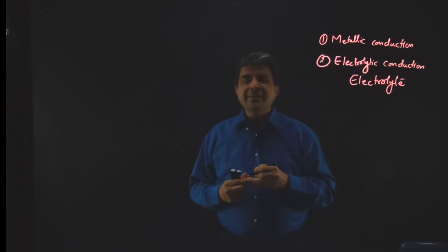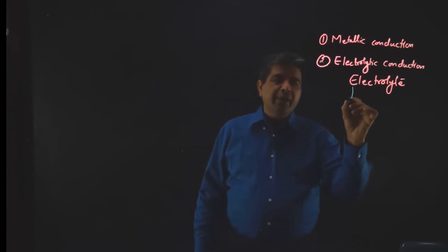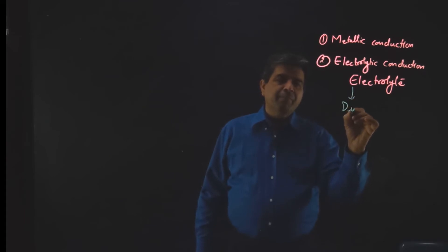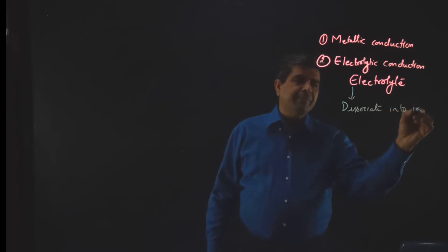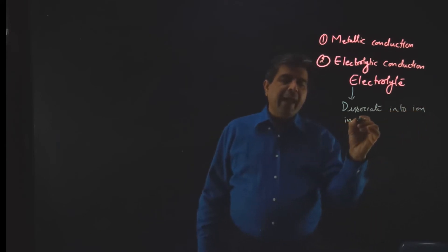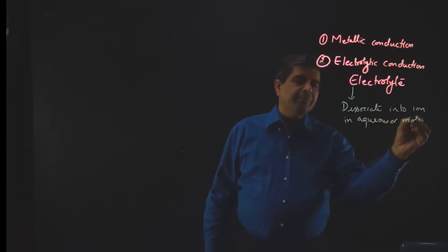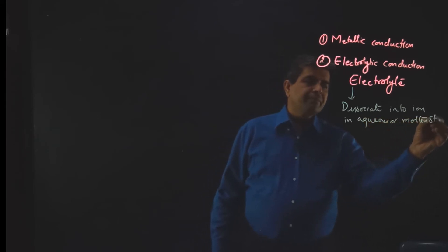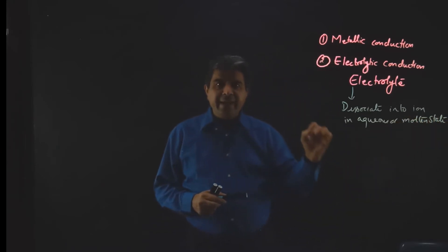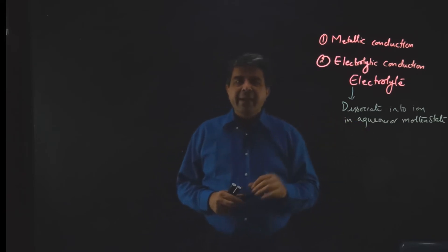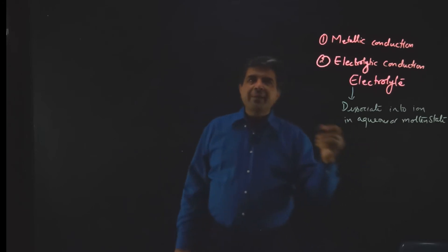An electrolyte is a substance that dissociates into ions in aqueous or molten state. If a substance dissociates into ions in its aqueous or molten state, it is termed an electrolyte. There are different types of electrolytes.